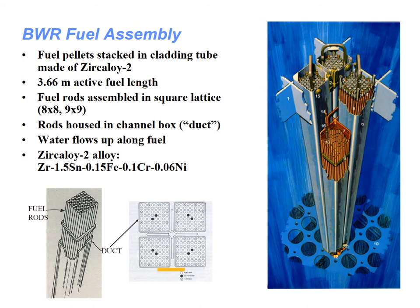The boiling water fuel assembly has fuel pellets stacked in cladding tubes made of Zircaloy, a zirconium-based alloy. These fuel rods are about three and a half meters long, arranged in square lattices of eight-by-eight or nine-by-nine, with water flowing up along the fuel. The rods are housed in a channel box, also called a duct. The Zircaloy alloy contains zirconium, tin, iron, chromium, and nickel.